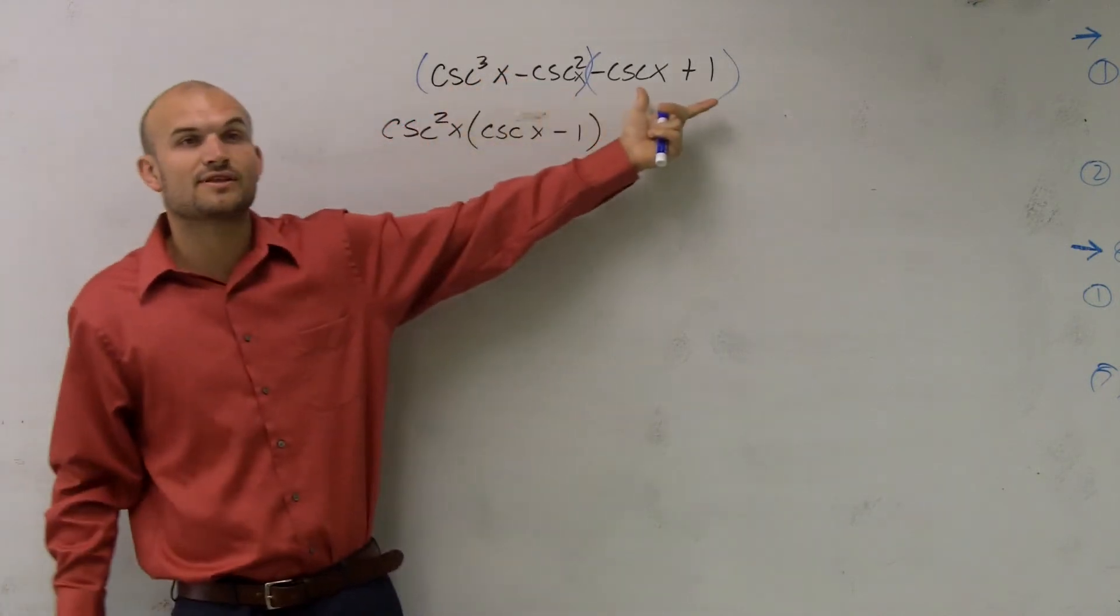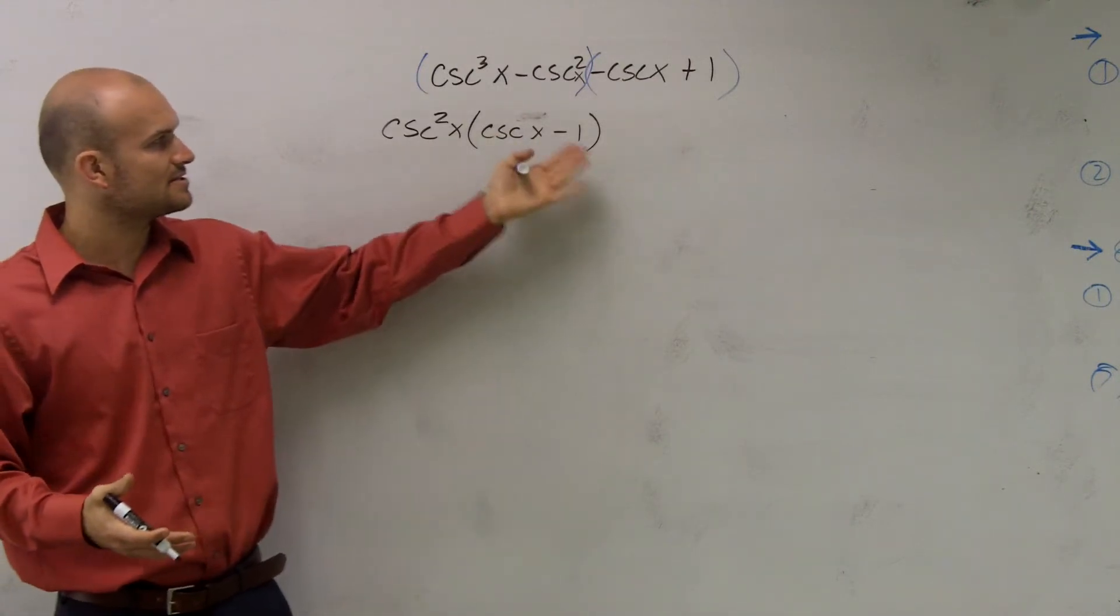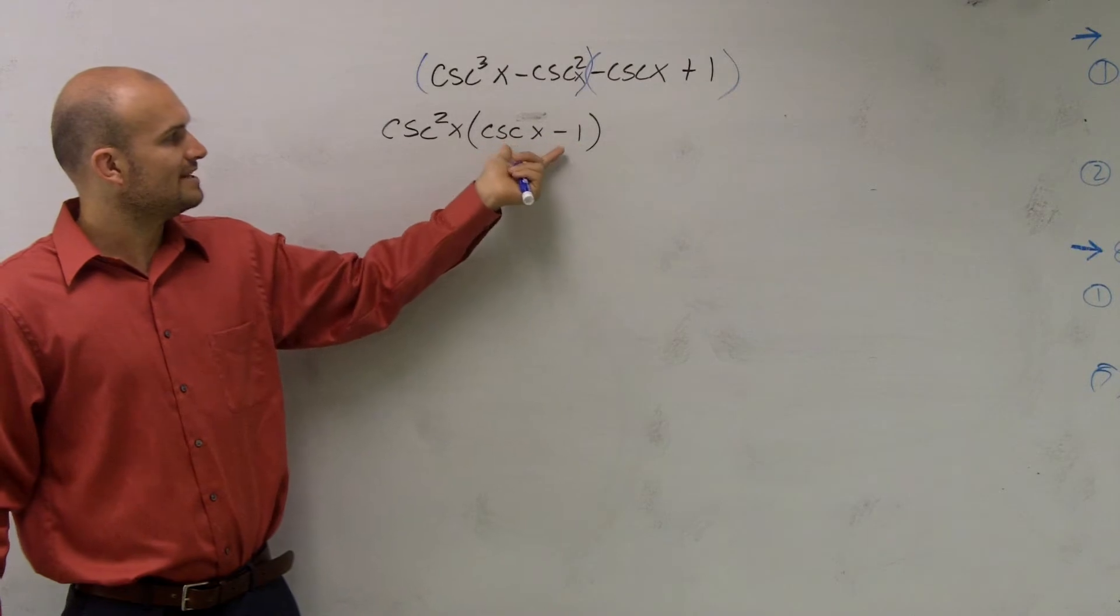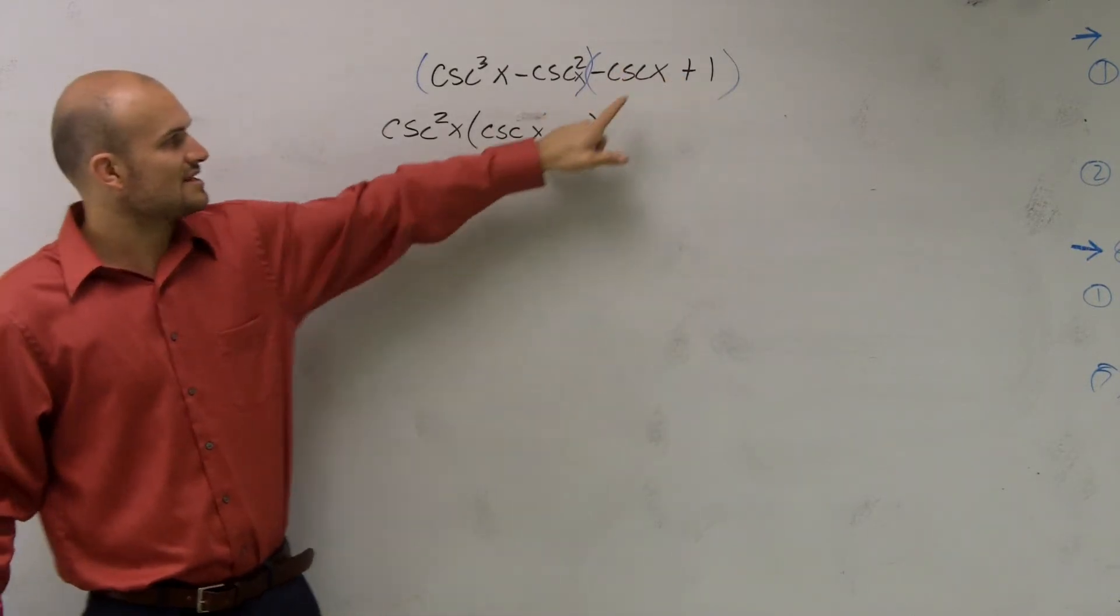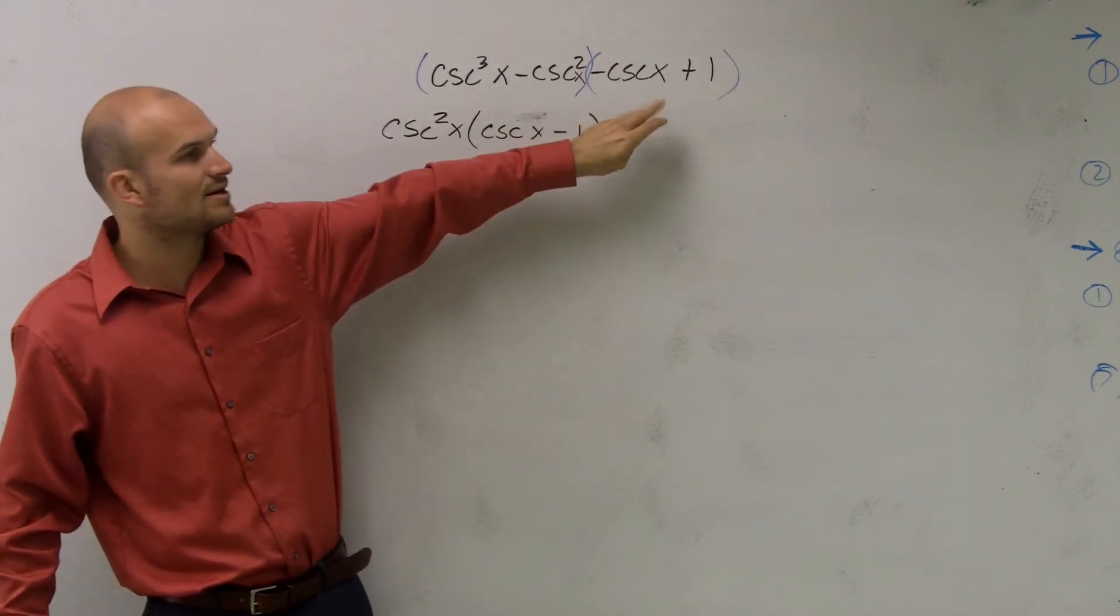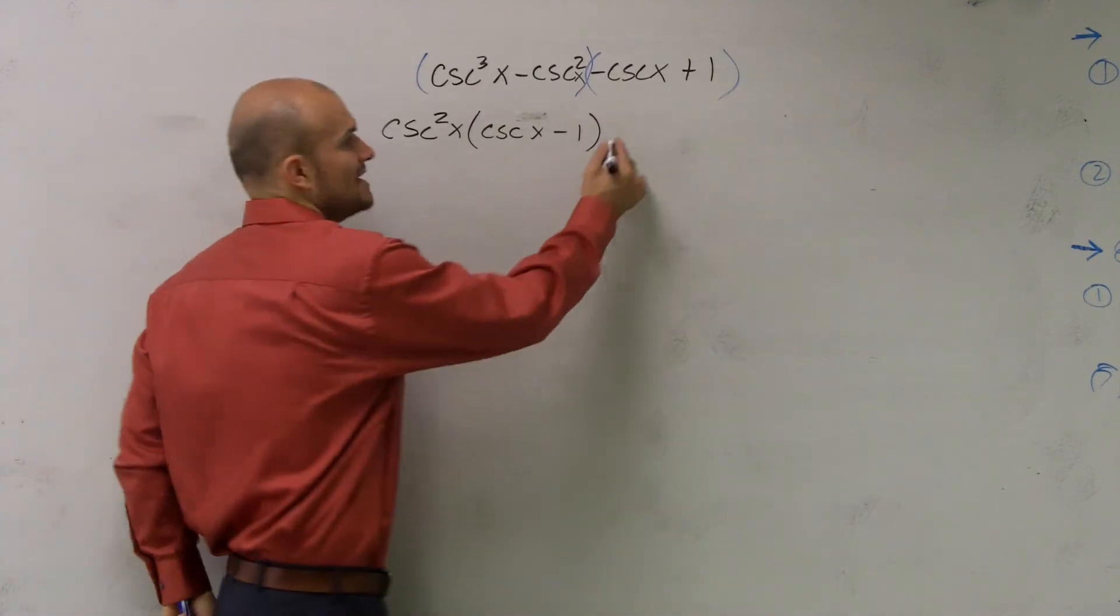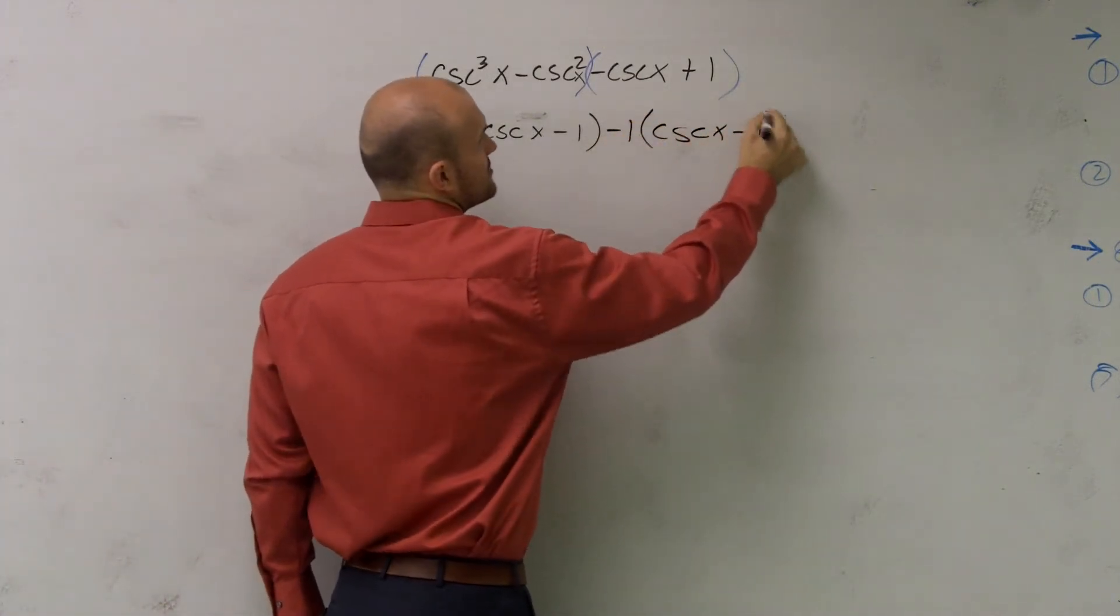Then I need to do that again for the next term. However, one thing you want to do is you need to understand that we want this term and this to kind of be the same when you're factoring by grouping. So since this is cosecant of x minus 1, I kind of want to see what do I need to factor out to make that the same. And if you factor out a negative 1, you'll be left with cosecant of x minus 1.